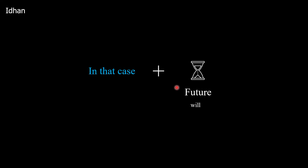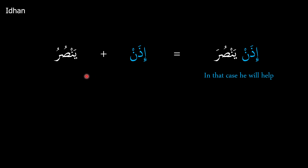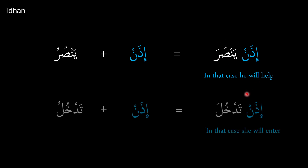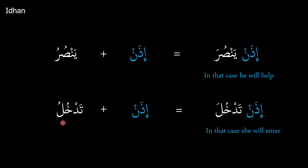Then we have idhan, which has the meaning of 'in that case,' and it will also add the future meaning of 'will.' So idhan yansuru becomes idhan yansura, meaning 'in that case, he will help' — 'in that case' comes from idhan, and the verb is locked into the future giving 'will.' Similarly, tadkhulu plus idhan becomes idhan tadkhula, meaning 'in that case, she will enter.'